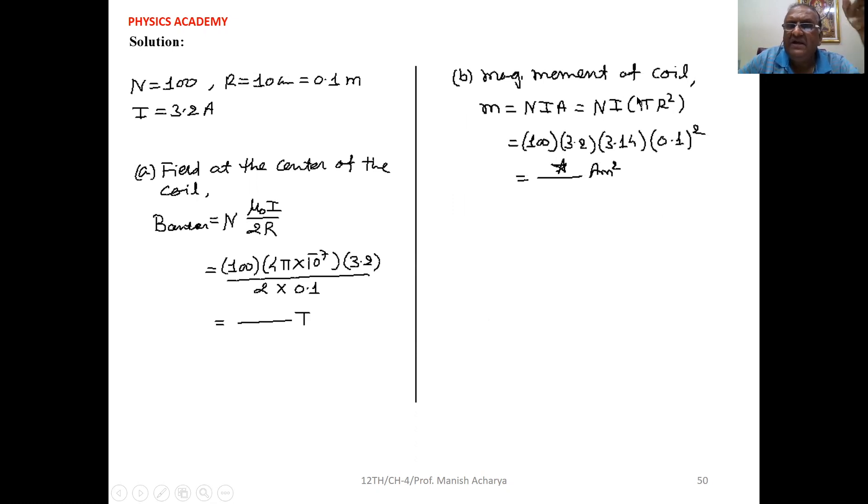Then magnetic moment of the coil: magnetic moment is I × A. If N number of turns are there, then multiply by N. So M = NIA where A is the area of the loop.